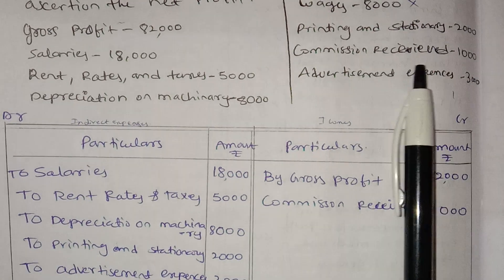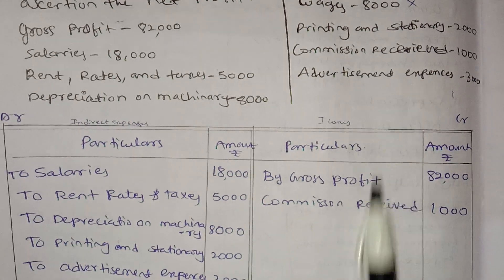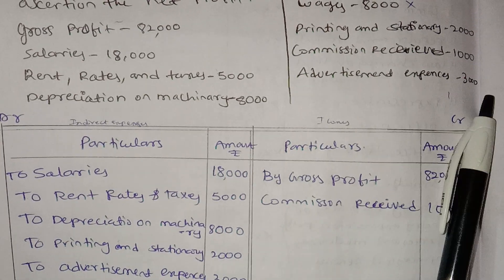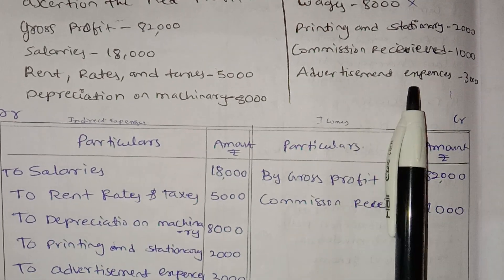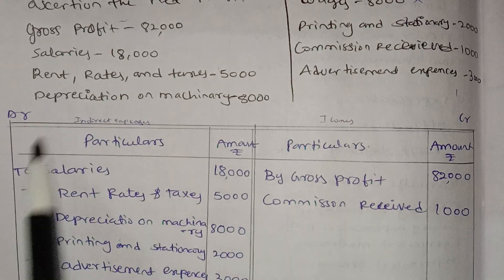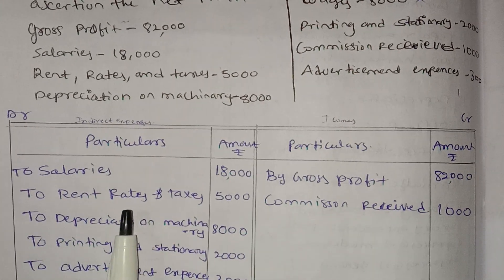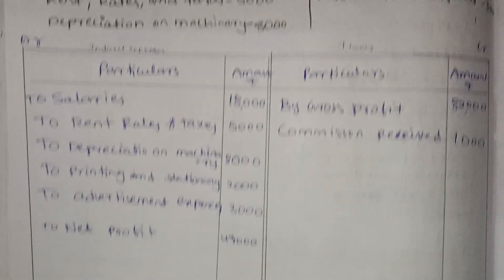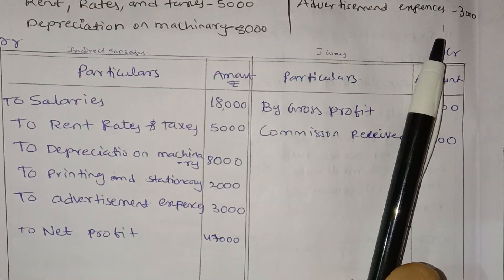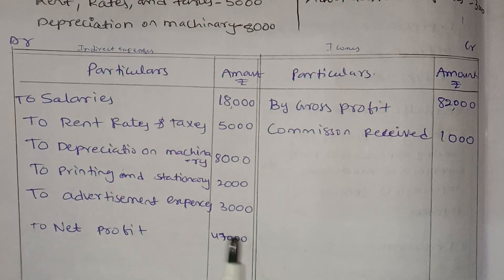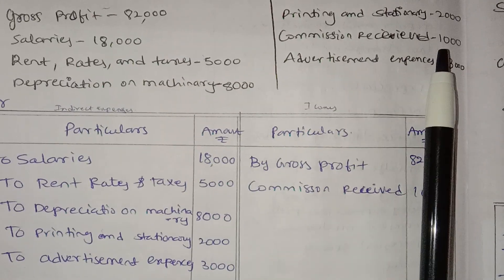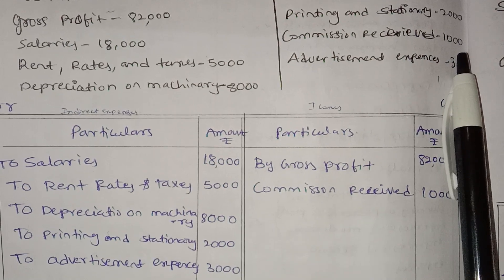Commission received — I am talking about income. We are talking about the advertisement expenses; we are doing this as indirect expenses. Advertisement is 3,000. Now we are talking about the net profit — we are talking about the income and profit.